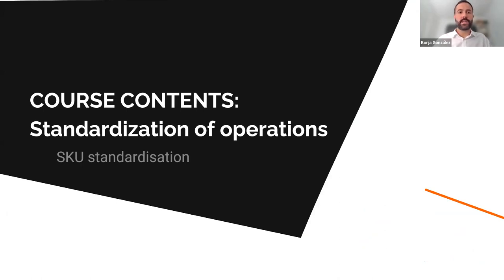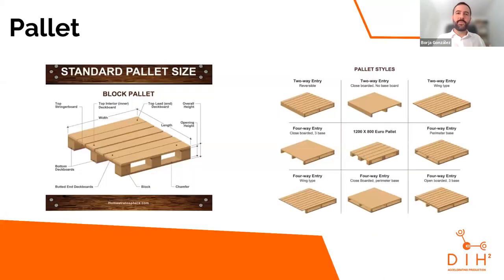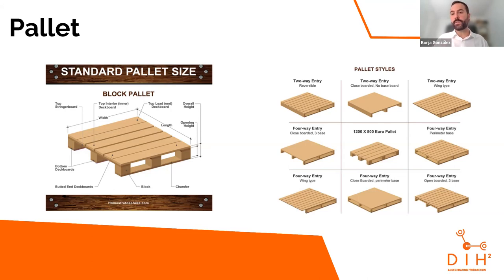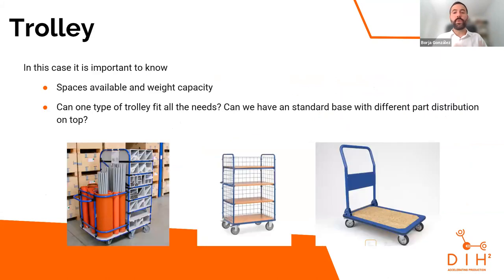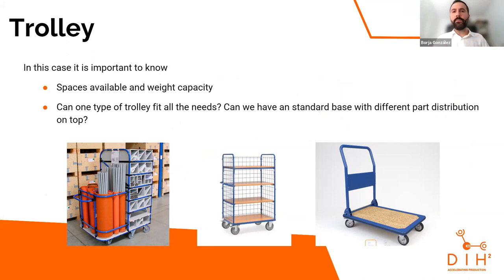Then we have the standardization of operations — how can we make sure our operations are as standard and optimized as possible? It comes down to very simple things: understanding your pallet needs, whether you're doing air deliveries and need plastic pallets, whether you're selling full pallets, or doing order picking, and what kind of racking you have. The same applies to boxes and trolleys. These seem like silly things but in day-to-day operations they bring accumulated efficiencies that drive better results.